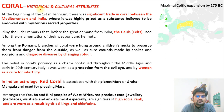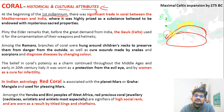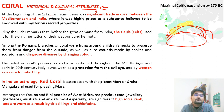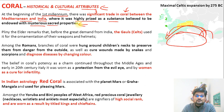Looking at the historical and cultural aspects of corals, at the beginning of the first millennium there was significant trade between India and the Mediterranean region. The Indus Valley Civilization and later the Mesopotamian Civilization had trade going on during this period. Corals were a highly prized substance because of the many mysterious and sacred properties associated with them.